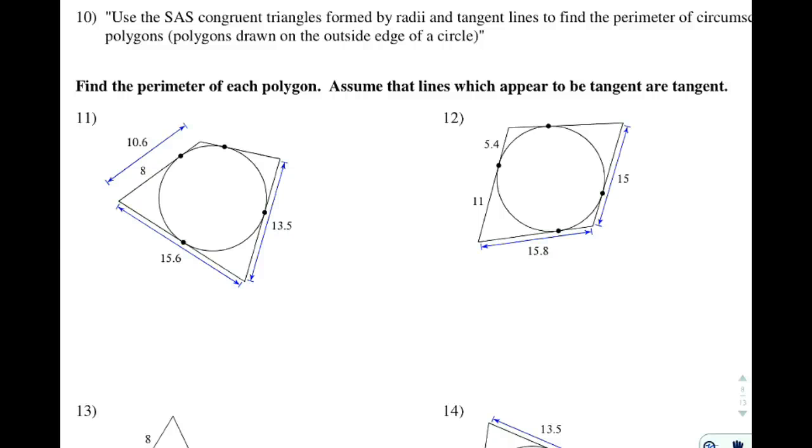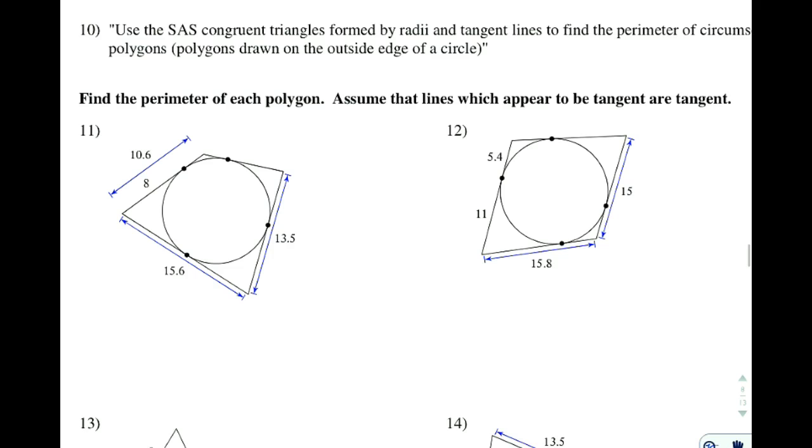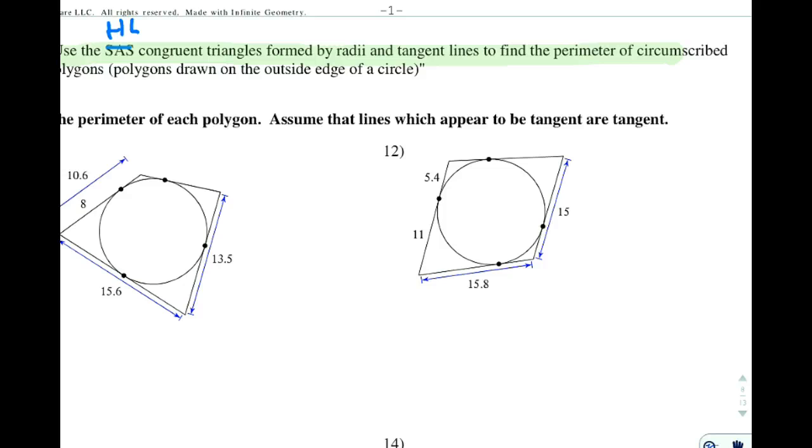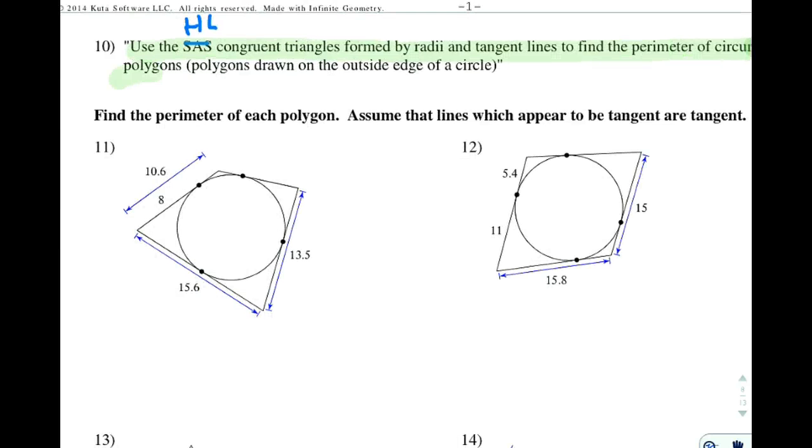On this page here, we're going to use the congruent triangles, and we're actually going to cross out SAS and put HL. That is a mistake I made earlier. We are going to use the congruent triangles formed by HL, formed by the radii and tangent lines, to find the perimeter of the circumscribed polygons, which are the ones drawn along the outside of the circle.